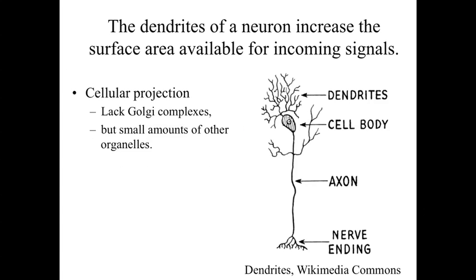What makes the neuron different from many other cells is its cytoplasmic extensions. It has a cell body — the soma or perikaryon — sitting in one location, but it extends processes, enlargements of the cytoplasm, out into the surrounding tissue, allowing the neuron to have a much broader impact: controlling a larger region of the body, either receiving signals or carrying a signal a great distance.